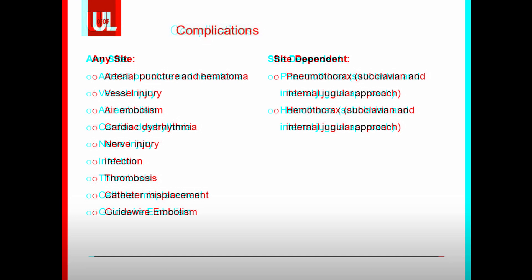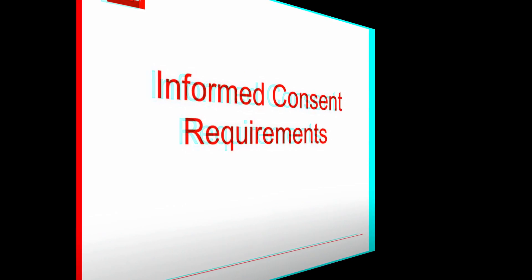While all of these are possible during placement, infection and thrombosis are significantly less likely to occur at the time of placement and do increase in risk every day the central venous catheter is left in place, even with optimal care. Complications that are more site dependent include pneumothorax, especially with the subclavian or internal jugular approach, and hemothorax with the subclavian or internal jugular approach.